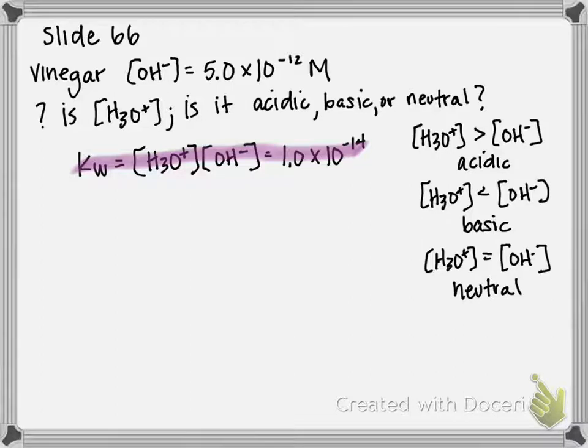What we can do with this equation is if we're given one of the components (H3O+ or OH-), we can rearrange and solve for the other. I'm looking for H3O+ in this case. I have OH-, and I also have Kw, which is always 1.0×10^-14.